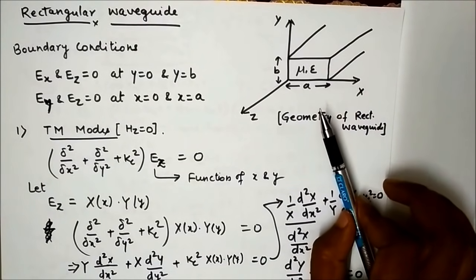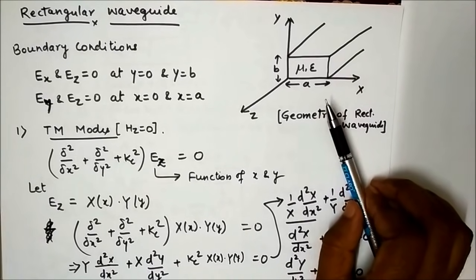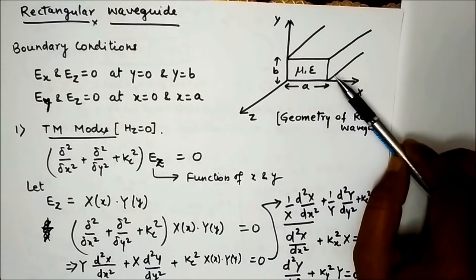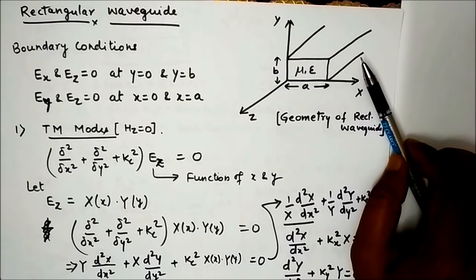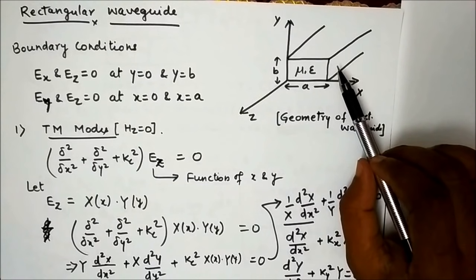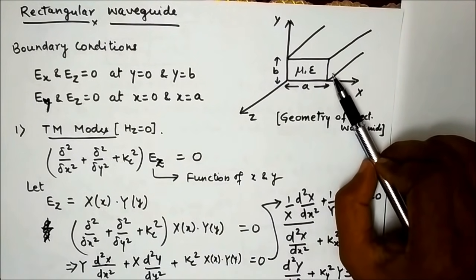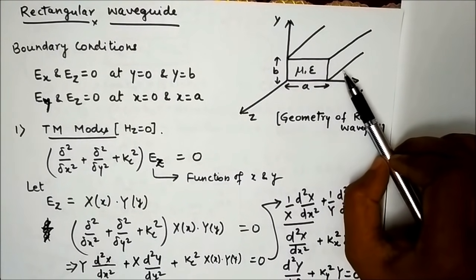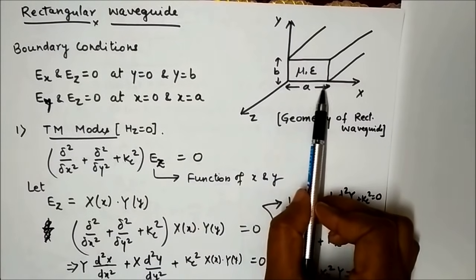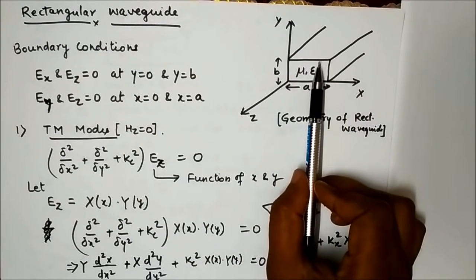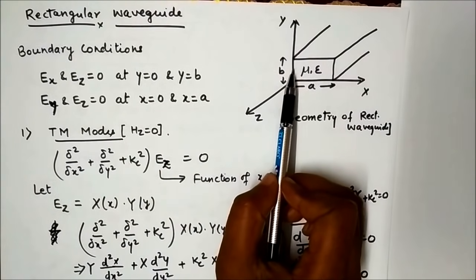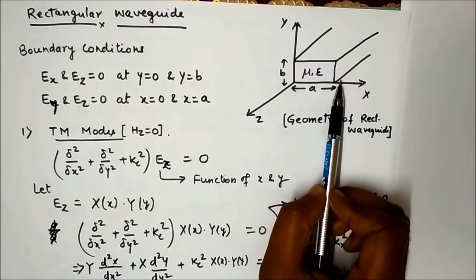First, we need to know the boundary conditions in rectangular waveguide. Ez is the longitudinal component, along the direction of propagation. On every wall, Ez will be tangential, and we know that the tangential component of electric field is zero at any conductor surface. We have conductor surfaces on four sides, so Ez equals zero at y=0 (bottom), y=b (top), x=0, and x=a (side walls).